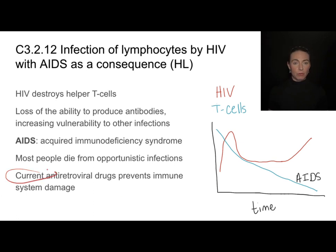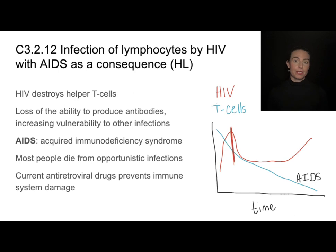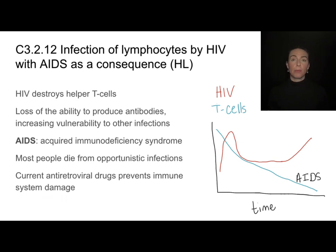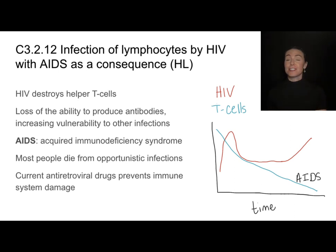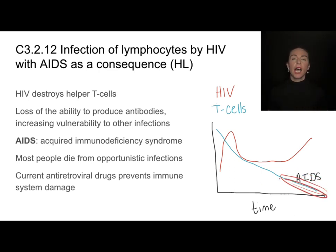Current antiretroviral drugs — current medicine against this HIV virus — can actually stop and halt this immune system damage. In fact, these drugs are getting so good now that someone with HIV who's receiving proper medical care can live a life just as long and just as healthy as someone without HIV. But it's about catching it early and preventing this total decimation of our antibody-producing capabilities.